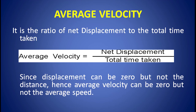Now, what is average velocity? Average velocity is the ratio of net displacement to the total time taken. So, average velocity equals net displacement divided by total time taken. Since displacement can be zero but not the distance, hence average velocity can be zero but not the average speed.